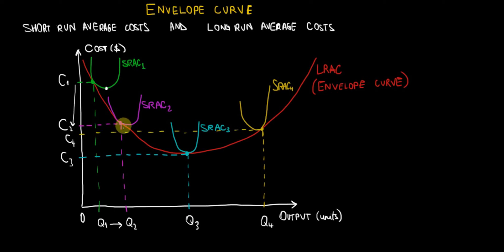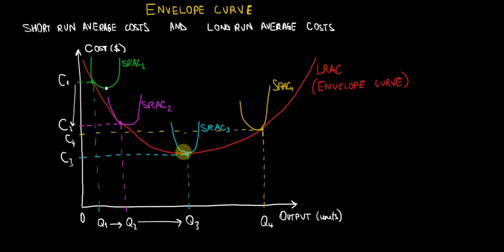The story continues. We move on along our production process and want to increase production from Q2 to Q3. In order to increase production so drastically, we need significantly more investment into our land, capital, and probably specialist labor. So our fixed factors of production have to be adjusted again.